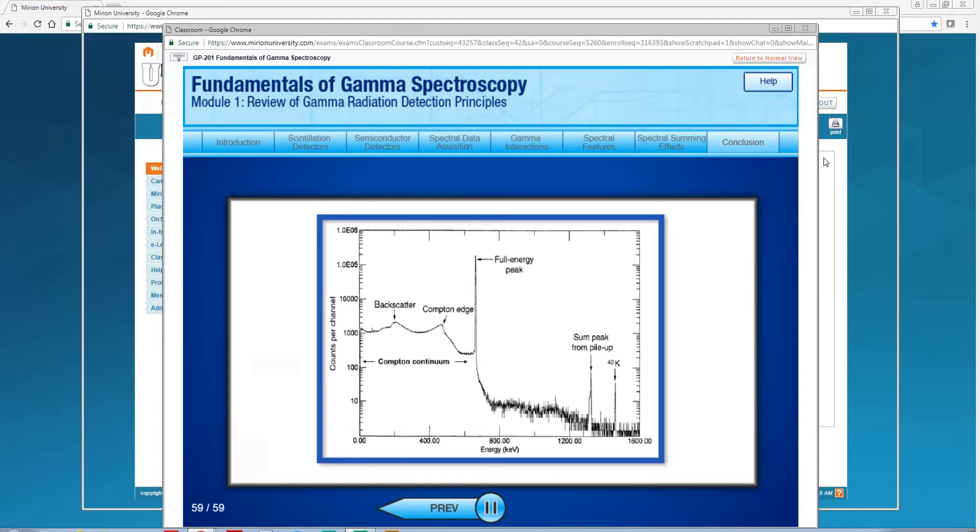Later in this training course we will emphasize the value of using sophisticated analysis software when performing gamma spectroscopy measurements. In the next training module we will examine the typical gamma spectroscopy system signal chain and discuss the various steps required for proper system hardware setup and operation.